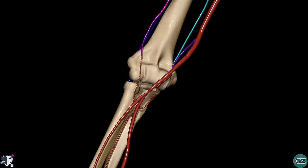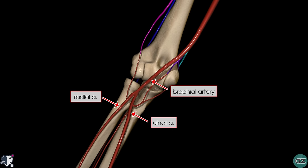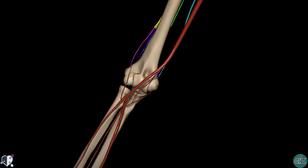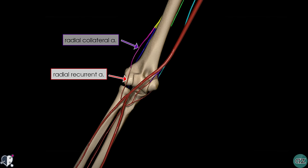As we saw before, the brachial artery terminates by dividing into the radial and ulnar arteries. The radial artery begins at the neck of the radius and passes laterally along the forearm. In this part of the tutorial, we'll just look at the proximal branches of the radial and ulnar arteries, and cover the distal branches in the next part. Proximally, the radial artery has only one branch: the radial recurrent artery, which we've just looked at anastomosing with the radial collateral artery.